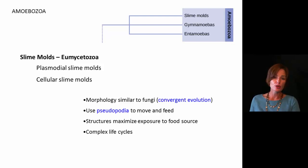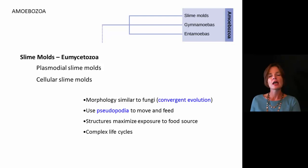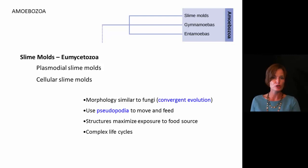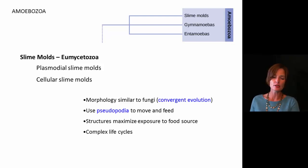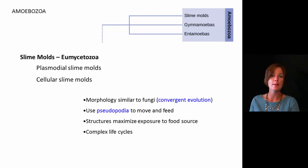With the slime molds, they do use pseudopodia to move and feed — that's one reason why they're grouped in the amoebozoa category. The large surface area we see in them helps maximize the exposure to their food sources so they'll be able to absorb more nutrients. They do have very complex life cycles, and they differ from each other: one has more of a cellular structure, while the other is more just a mass of cytoplasm.